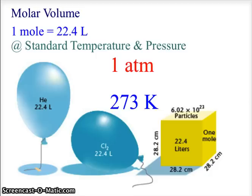And when we look at that, if we have one mole of helium and we have one mole of chlorine, and they are both at one atmosphere and 273 Kelvin, or 760 millimeters of mercury and zero Celsius, they are going to fill a balloon, a container, to 22.4 liters of volume. And that is the molar volume.